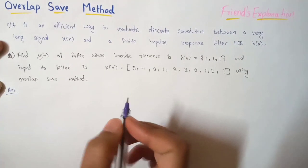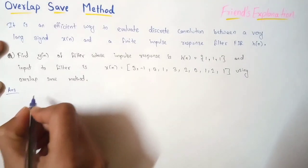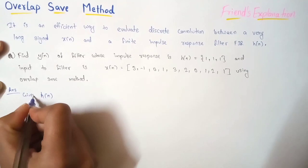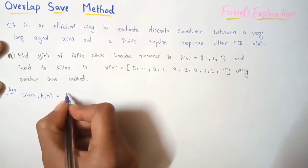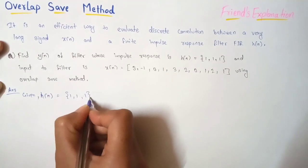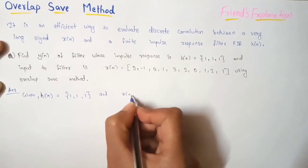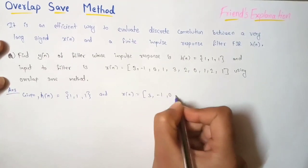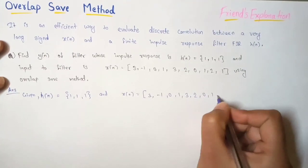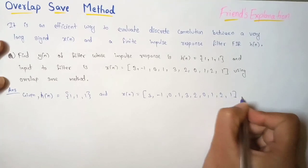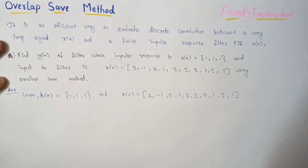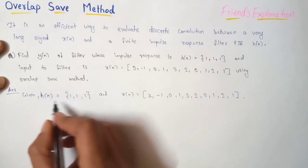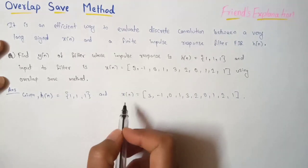First, we will write whatever is given in this question. The given things are: h(n) = {1, 1, 1} and x(n) = {3, ...} and then we are going to perform convolution of x(n) and h(n) using the overlap save method.